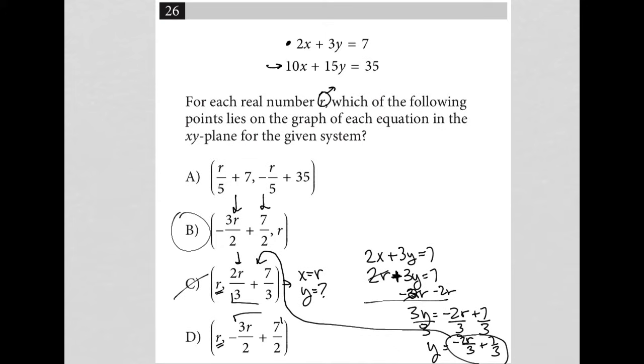We have a positive 2r over 3 instead of a negative 2r over 3. So, that's out. And then choice D, we have negative 3r over 2 instead of 2r over 3. So, that's out. So, I'm pretty confident that B is the right answer.